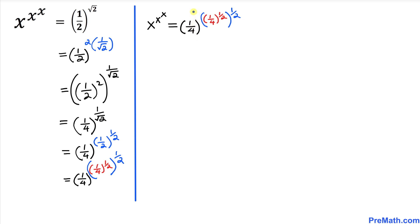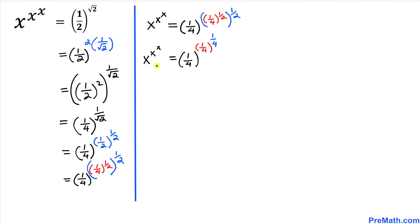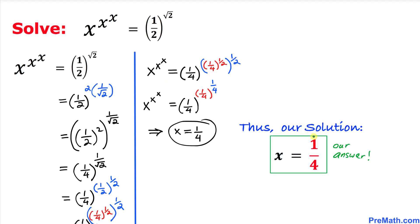Let's be careful here. I have copied everything on the right hand side as we are running out of space. Let's apply this rule of exponents once more. The right hand side becomes 1 over 4 to the power 1 over 4, and the remaining exponent is 1 over 2 times 1 over 2 which is 1 over 4. Finally our equation is x to the power x to the power x equals 1 over 4 to the power 1 over 4 to the power 1 over 4. So our value of x is 1 over 4.